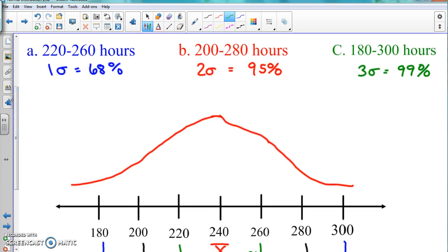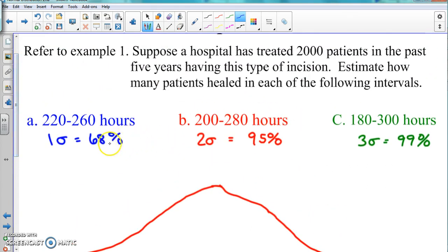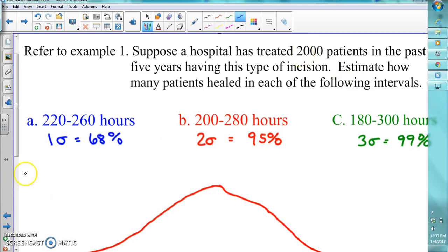The only other part we're going to deal with is that there are 2000 patients. 68 percent of those 2000 patients should be healed here, 95 percent should be healed here, and 99 percent should be healed here. Let's start with the first one to figure out how many there are. We're going to multiply.